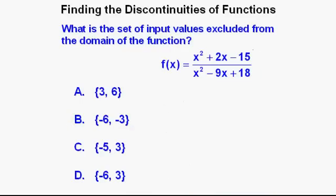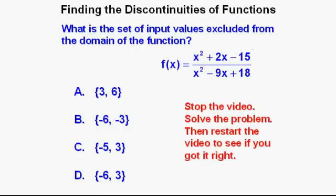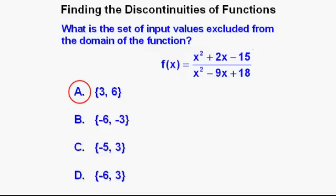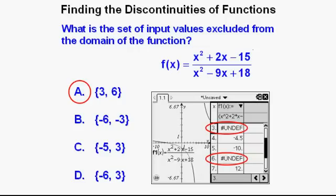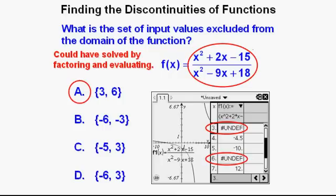Here's our last problem: What is the set of input values excluded from the domain of f(x) = (x² + 2x − 15) / (x² − 9x + 18)? The correct answer is A — 3 and 6. The graph shows a vertical asymptote at about x = 6, and the table view shows the function undefined at both x = 3 and x = 6. We could also have factored both the numerator and denominator to find these values algebraically.